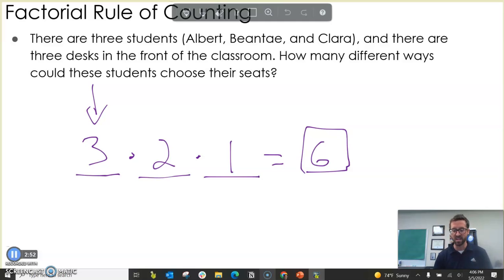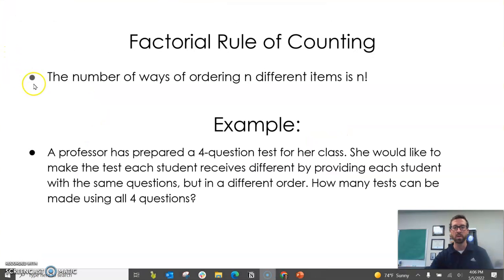If we wanted to generalize this idea, this idea of multiplying and decreasing the number that you multiply by every time, that's called a factorial. And the factorial is like the exclamation point. This is called the factorial rule of counting. The number of ways of counting n different items is n!. It's like an excited n, but this right here means we're multiplying the decreasing value every time.